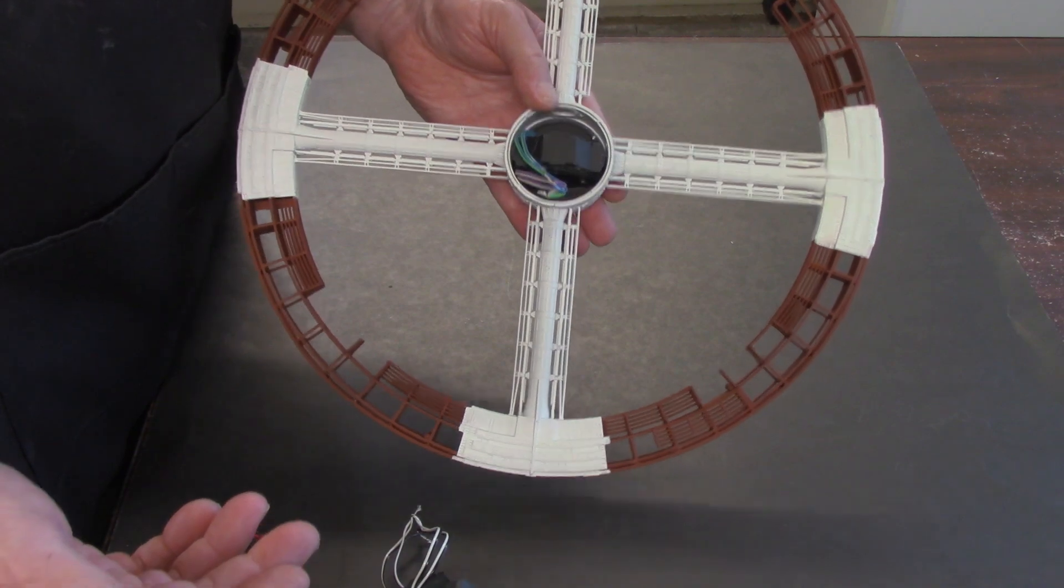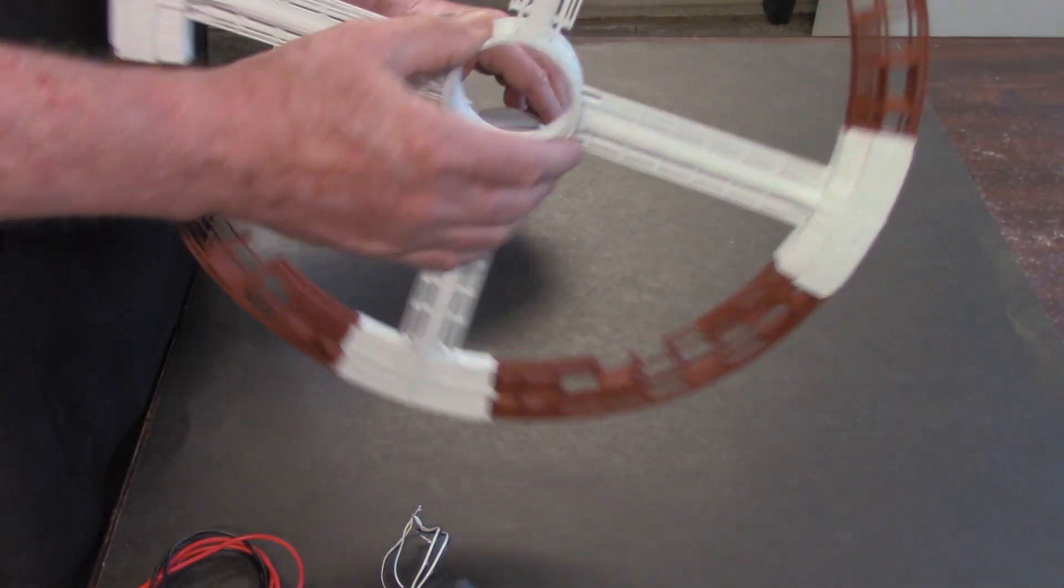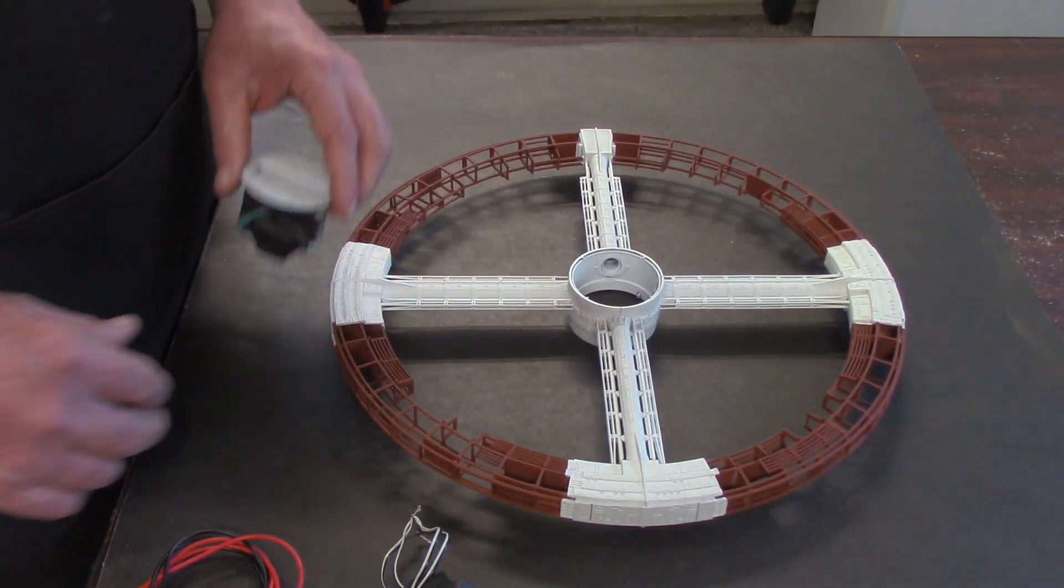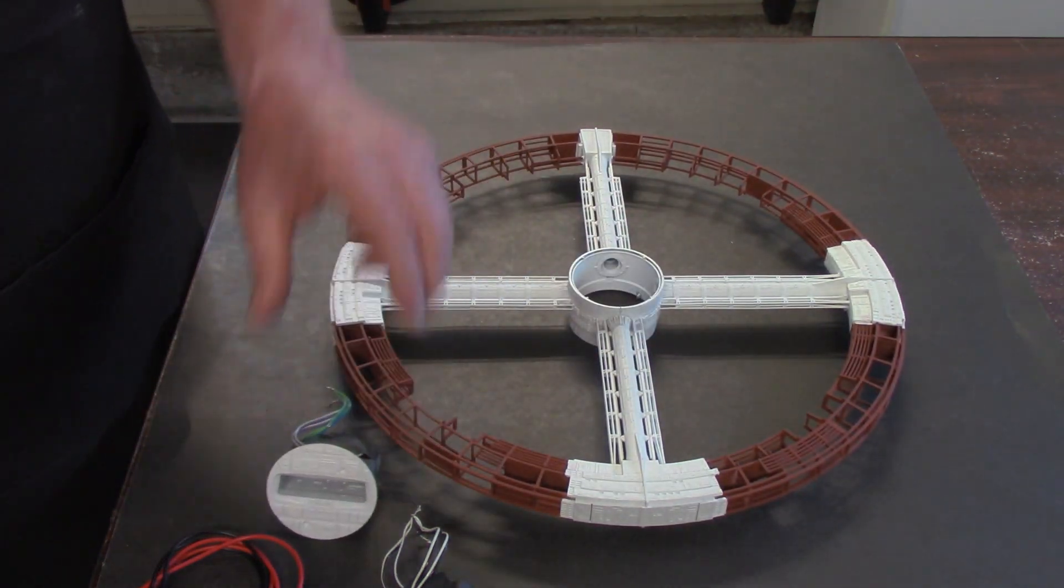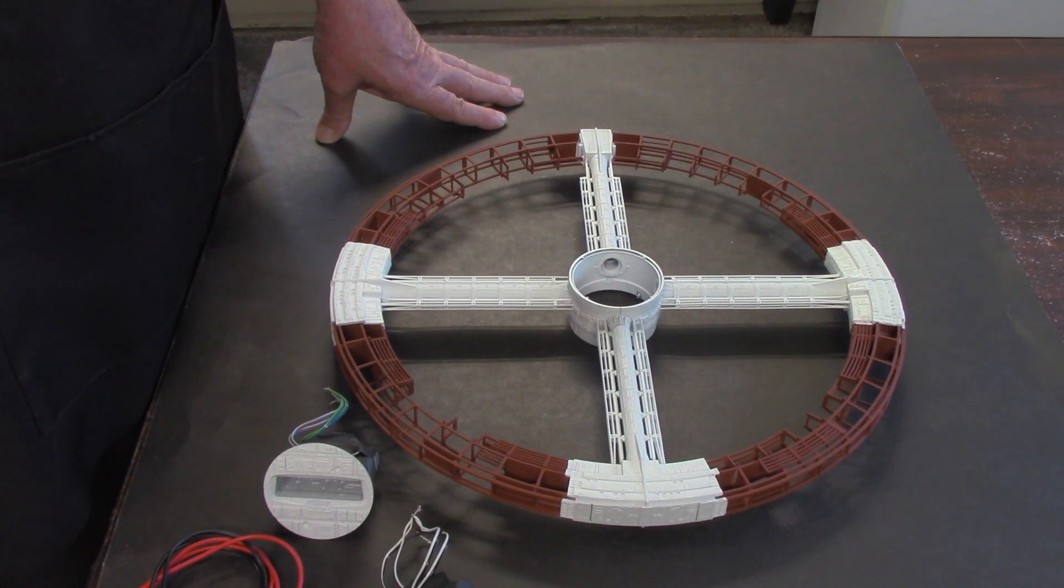So again, this is an update on the lighting. We'll have this lighting kit available for the 2001 Space Station. It'll consist of both the main hangar bay area light and the window lights for the main ring.